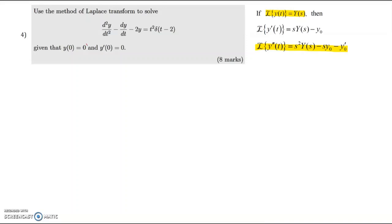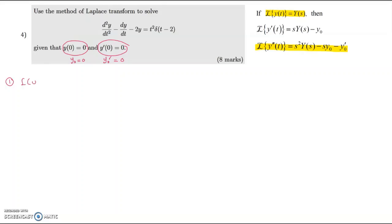y(0) equals 0 and y'(0) equals 0. The first step is to write the equation in terms of Laplace transform: Laplace of y'' minus Laplace of y' minus 2·Laplace of y equals Laplace of t²·δ(t minus 2).